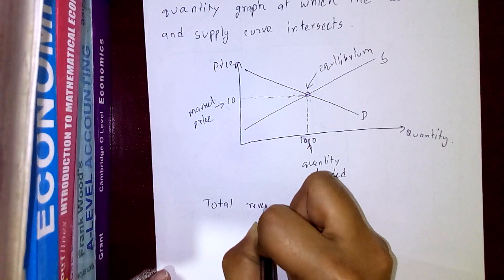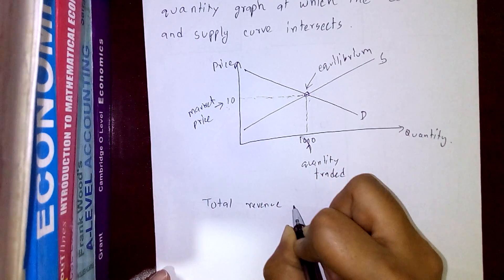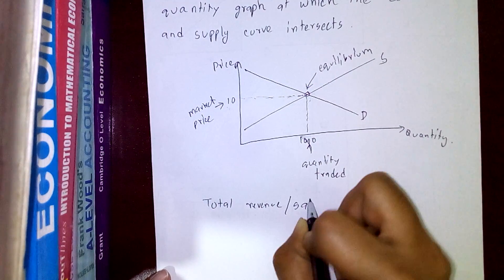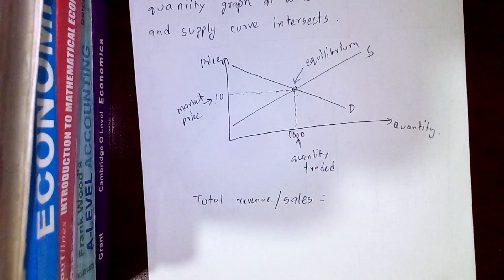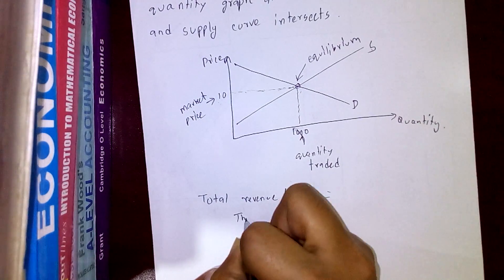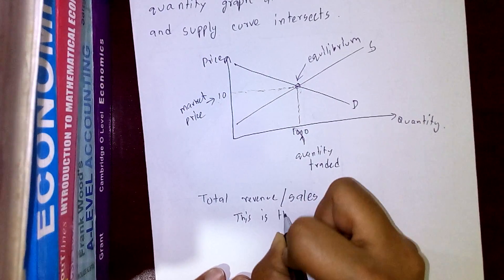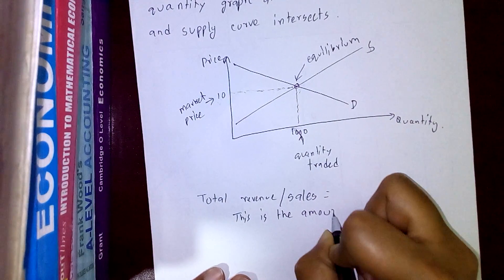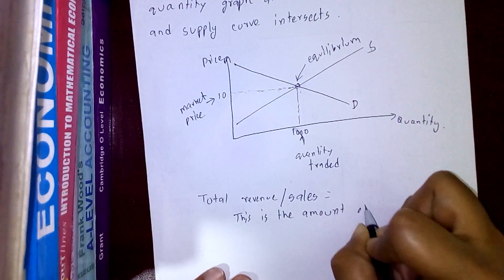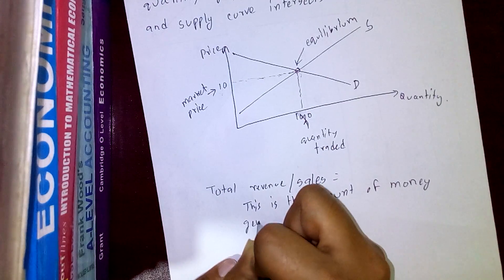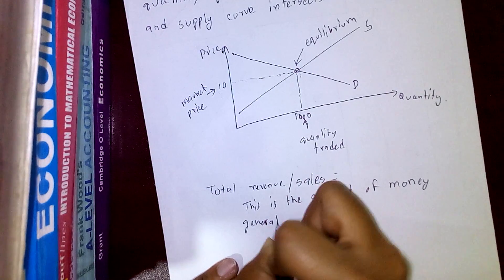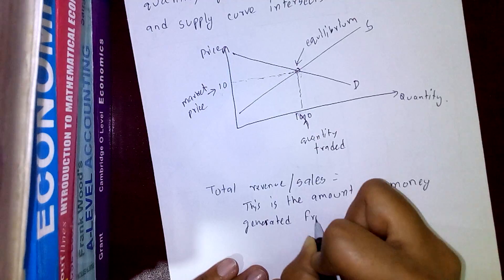For example, if you're buying a candy for 10 bucks at your local store, that's because the demand and supply curve of that candy fixes the price at 10. If you buy the same candy for 100 bucks two months later, that's because the demand and supply curve for that product sets the price at 100 — which I'll explain later.